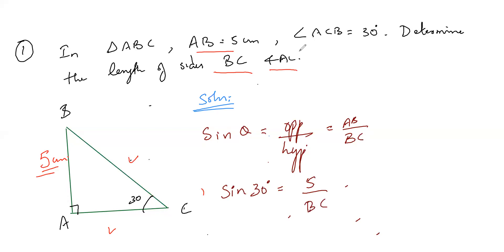So this implies, what is sine 30? Sine 30 is 1 by 2. 1 by 2 is equal to 5 by BC. Or else BC is equal to what? BC is equal to 10. Hypotenuse is 10, so BC is equal to 10.